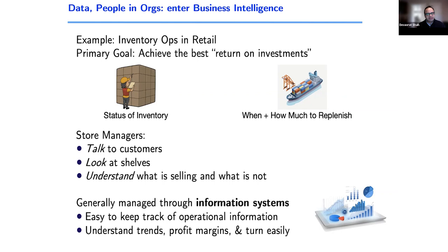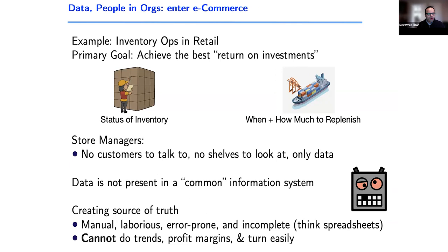The problem is that customer demand varies over time — it's different in fall, spring, Diwali, and Christmas. That's where machine learning demand forecasting comes in as the next wave. And then something disruptive happened: not just COVID, but more broadly retail became omni-channel. People started selling online and in-store, and the previous facility of talking to customers and looking at shelves disappeared. Now everything is data, and that data may not be in one common place because you're selling on different channels.